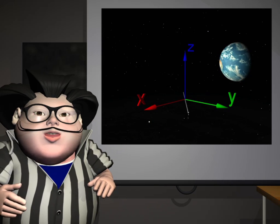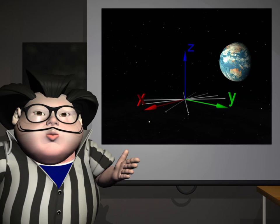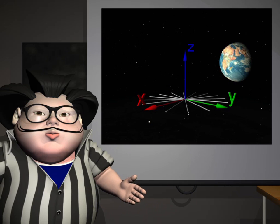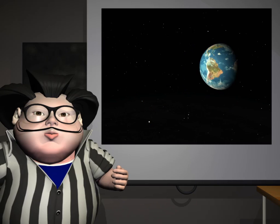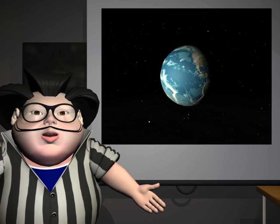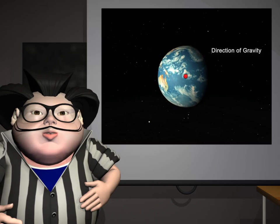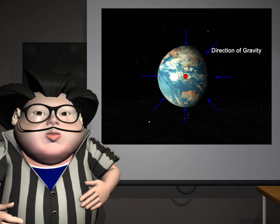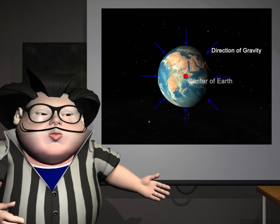Second, the horizontal line is perpendicular to the vertical line. On Earth, the vertical line is parallel to the direction of gravity and points to the center of the Earth.